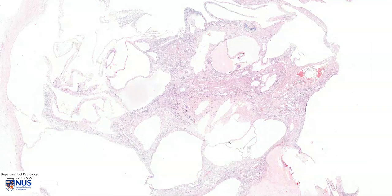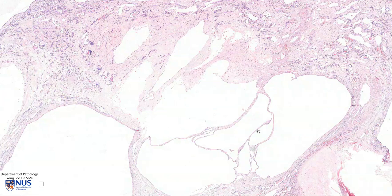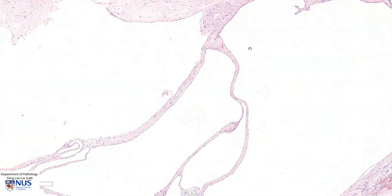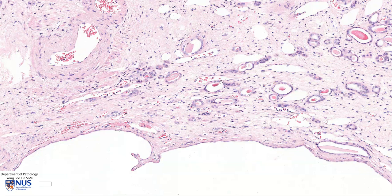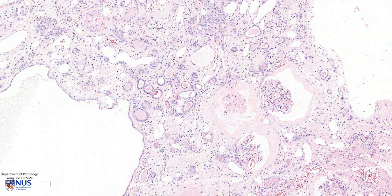In summary, this is an example of autosomal dominant polycystic kidney disease. We have numerous cystic structures that originally arose from the nephrons, and these cysts are lined by cuboidal to flattened epithelium. The intervening parenchyma shows tubular atrophy with interstitial fibrosis and mild chronic inflammation, as well as glomerulosclerosis. This condition can eventually lead to progressive renal dysfunction and renal failure.